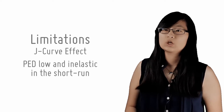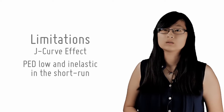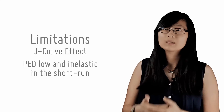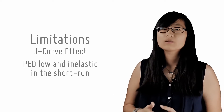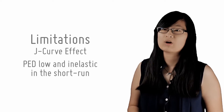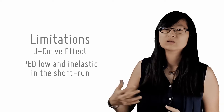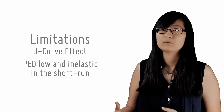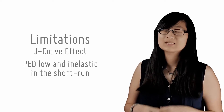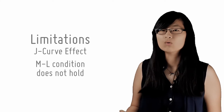Consumers take time to change their consumption patterns and preferences away from imported goods. It takes time to find domestic substitutes for these imports. Furthermore, producers have to fulfil the terms of prevailing contracts and thus might not be able to change the quantity and price of imports or exports. Because of the low PED for imports and exports in the very short run, the ML condition does not hold.